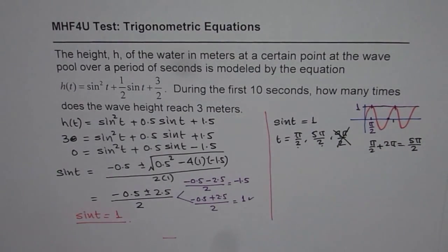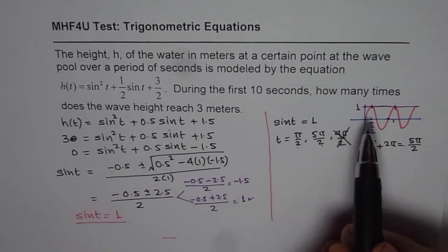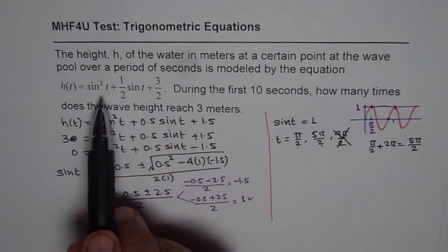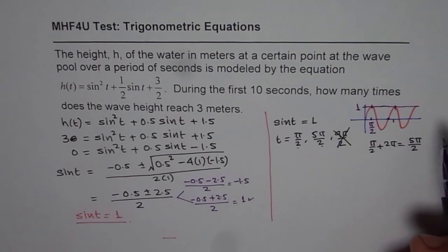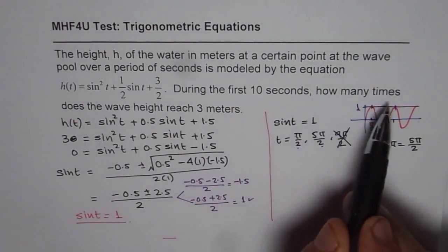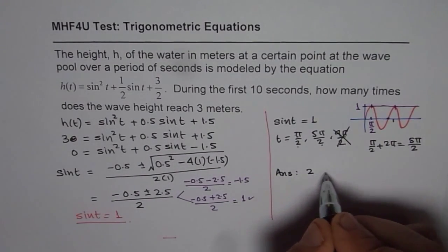So this is not in our domain. So these are the two possible times when the function could reach the maximum value of 3 meters. So this is indeed the maximum value because sin can have 1 as its maximum value. So we get during the first 10 seconds, how many times does the wave height reach this? So our answer is, it reaches 2 times.